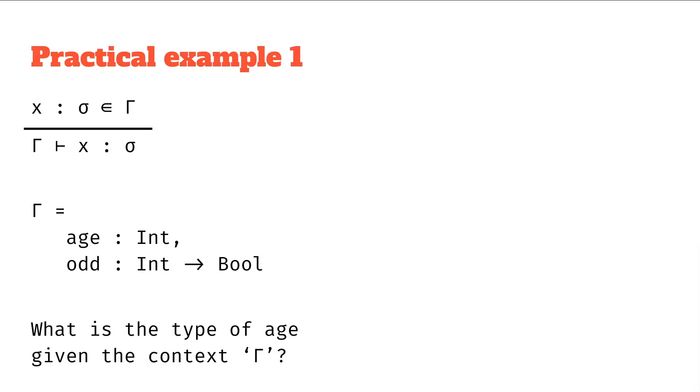Let's say we have an example context capital gamma, which has two assignments. The first assignment is age as type int, and the second assignment is odd as type int to bool. You'll see as we go through the series, we'll use these and a few others as canonical examples of some functions or some variables we'll have.